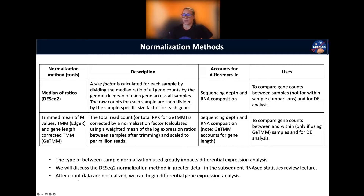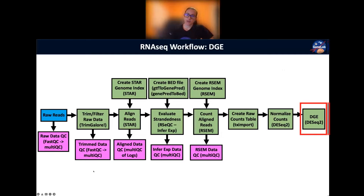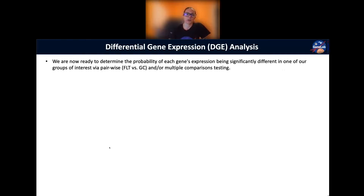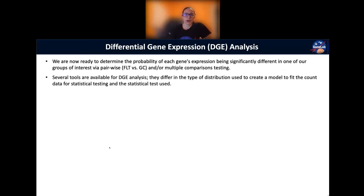We're going to discuss the DESeq2 normalization in greater detail in the RNA-seq stats lecture that Lauren will present. After the count data are normalized, we can then begin differential gene expression analysis. We would be ready to determine the probability of each gene's expression being significantly different in one of our groups of interest through pairwise or multiple comparisons testing — pairwise comparing one group with another, multiple comparisons similar to an ANOVA test. Lauren will go over this in the stats lecture.